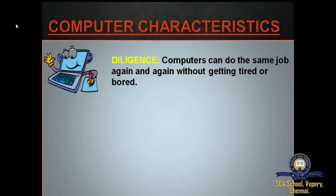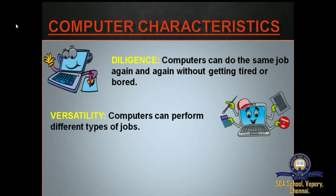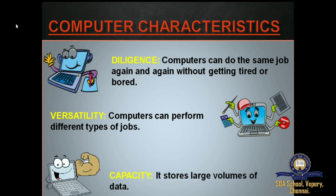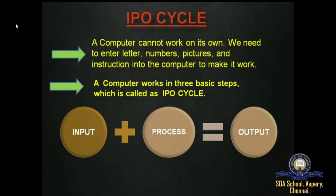The next characteristic is diligence — computers can do the same job again and again without getting tired or bored. The next characteristic is versatility — computers can perform different types of jobs. The next characteristic is capacity — it stores large volumes of data.